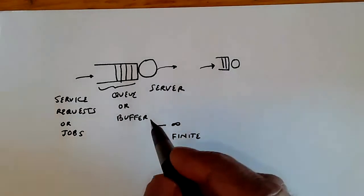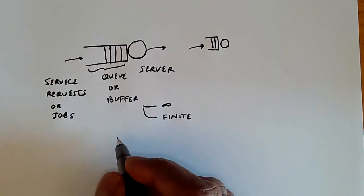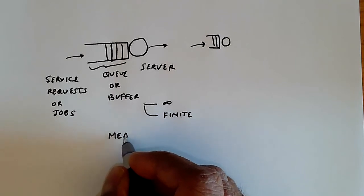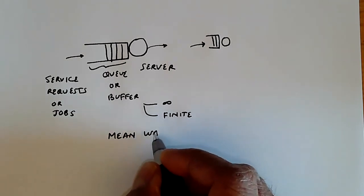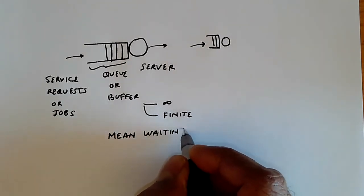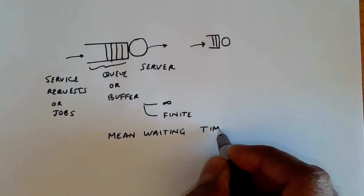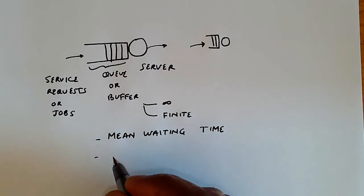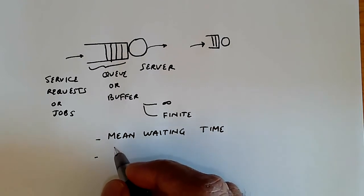So, the quantities if you're interested in are things such as the mean waiting time, which is how long do we need to wait on average for, to get service, for a customer to get service.